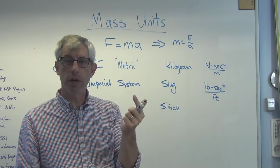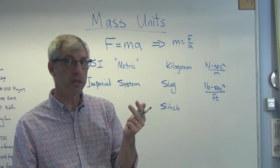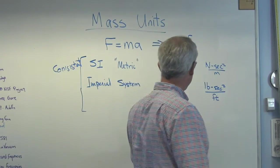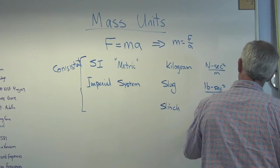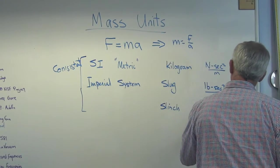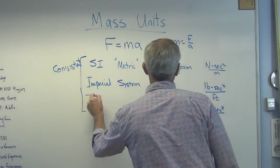If your set of units, your force is pounds, your time is seconds, and your distance is inches, not feet, you get the slinch. This is a pound second squared per inch.